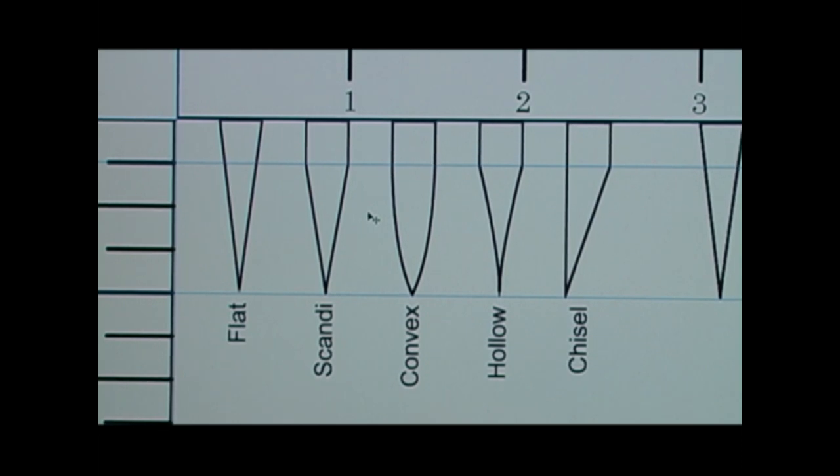Next we have the convex grind, which is basically, as you can see, just an outward curve from the edge all the way up, just a nice gentle curve. And I generally do this on the slack part of the belt. When the belt gives a little bit, that just naturally takes that shape and gives you that nice convex grind.